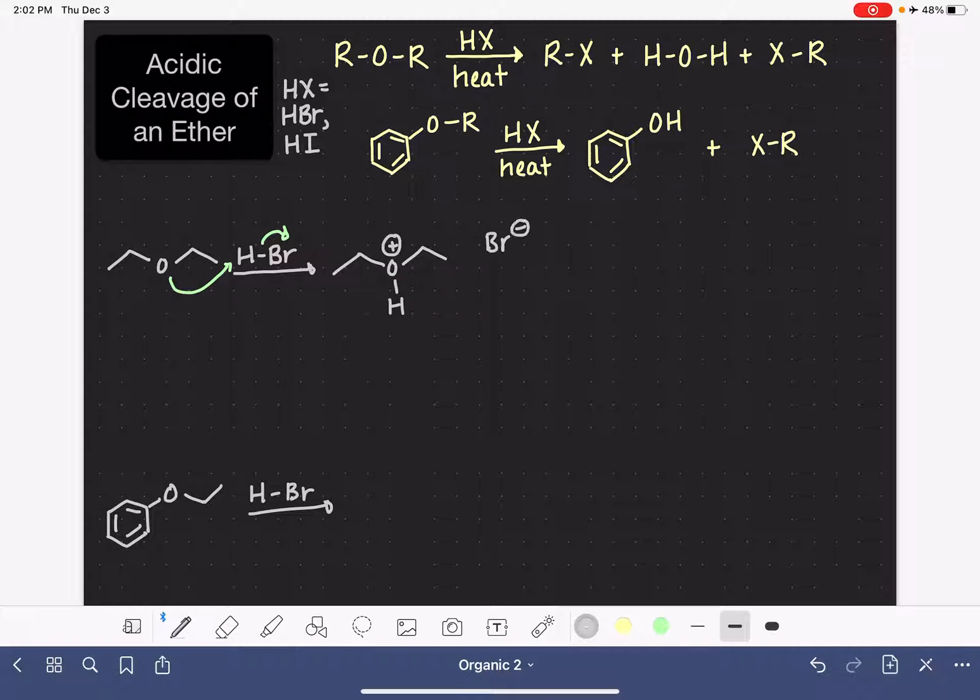the halogen—bromide in this case, or iodide if you're using HI—will attack either one of the carbon atoms bonded directly to the ether's oxygen. It's going to eventually attack both of them, so it doesn't matter which one you start with. This is an SN2 reaction, so we're breaking that carbon-oxygen bond. In this first step, we've produced an alcohol and one of the halogenated alkanes. There's product number one.